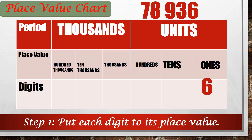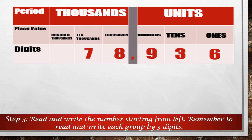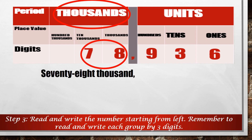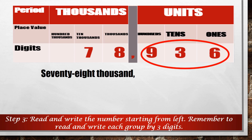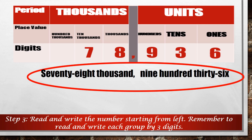Let's move on to the second number. We put each digit in its place value. Then we separate groups of numbers using commas. Starting from the left, we have 78 in the thousands group, so we can write 78,000. 936 is in the units group, so we write 936. Put together, we can read and write the number as 78,936.